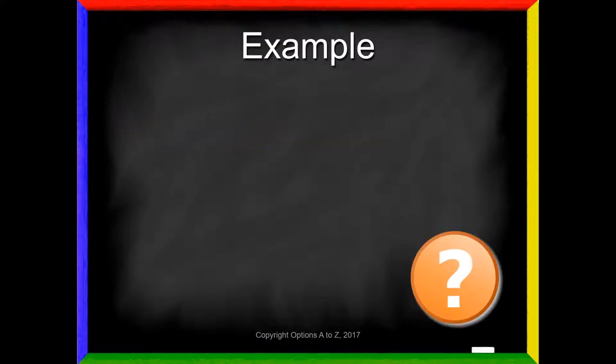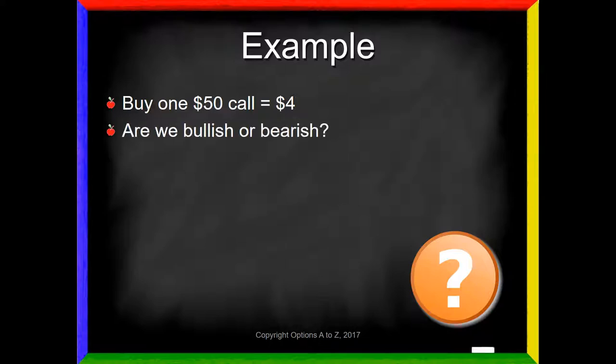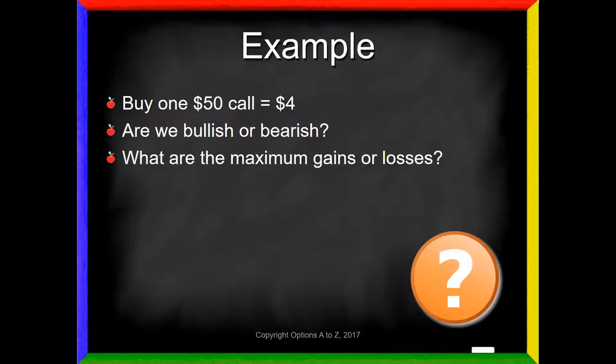For this video I'm focusing mostly on the expiration curve, but I will touch lightly on the current curve at the end. The best way to understand a profit and loss diagram is to construct one by hand. Your broker's platform will do these for you automatically, but to better understand them it really helps to construct one by hand. So let's pretend we're going to purchase a $50 call for $4 — that means $400 plus commissions. We've got lots of questions: are we bullish, are we bearish, what are the maximum gains, what are my losses, what's the break-even point?